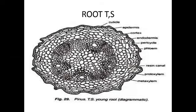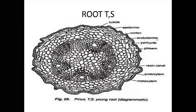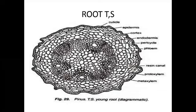At the center region, the stele is present. The stele is surrounded by endodermis, which is a single layer. Below the endodermis, a single layer of pericycle is present. From this pericycle, lateral roots are developed in the Pinus root. The endodermis is also called the starch layer.